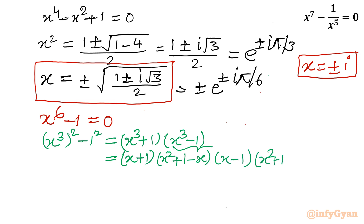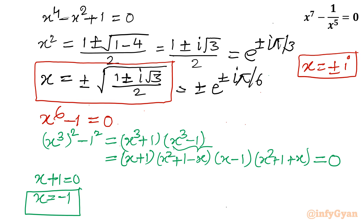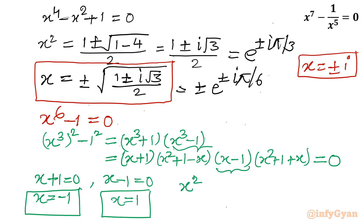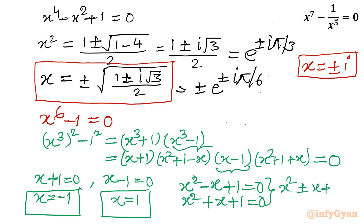Here we have four roots visible. Taking x plus 1 equal to 0 gives x equal to minus 1 — the first real solution. Taking x minus 1 equal to 0 gives x equal to 1. There are also two quadratic equations remaining: x square minus x plus 1 equal to 0 and x square plus x plus 1 equal to 0, which together we can write as x square plus or minus x plus 1 equal to 0.